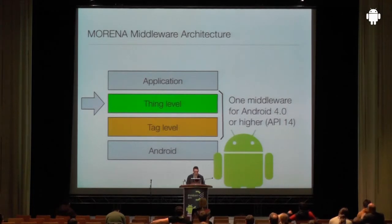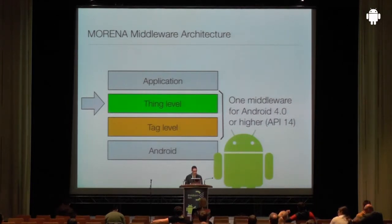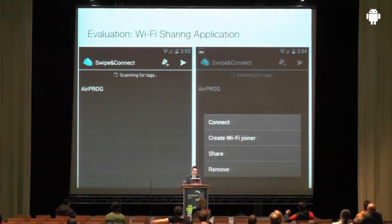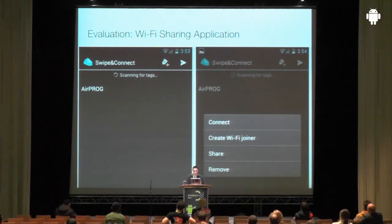The Morena middleware consists of two layers. The first provides the highest level of abstraction — the thing abstraction. Morena works with Android 4.0 (API level 14 and up) because it contained a major upgrade to the NFC stack. The example application I'll use is called Swipe and Connect: you swipe an NFC tag containing Wi-Fi network credentials to connect to that network — for example in McDonald's, instead of typing the Wi-Fi key, you just scan a tag.